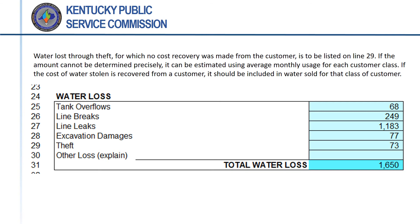Water lost through any form of water theft, such as unauthorized connections or bypassing or tampering with a meter, is to be listed on line 29 unless the cost of the stolen water was recovered from the customer — in those cases, the amount should be included in water sales for the appropriate customer class. If the exact amount of water stolen cannot be determined or estimated from a customer's prior usage records, the utility may estimate the amount based on average monthly usage for the corresponding customer class.